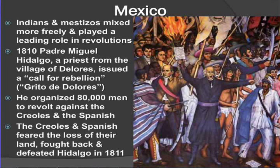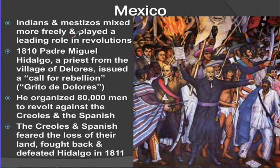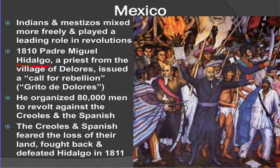In Mexico, Native Americans and Mestizos are going to mix more freely and play a leading role in the revolutions — it's not just the Creoles. Mestizos are a mix of Spanish and Native peoples. This guy, Miguel Hidalgo, a priest, is going to issue a call for rebellion and organizes 80,000 men to revolt against the Creoles and the Spanish. The Creoles and Spanish fear the loss of their land and fight back, defeating Hidalgo in 1811. We'll debate how priestly his actions were in class.